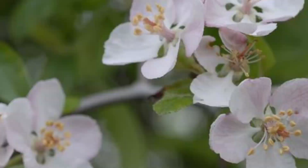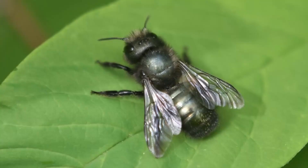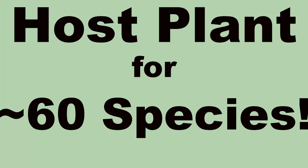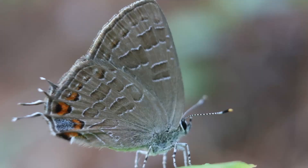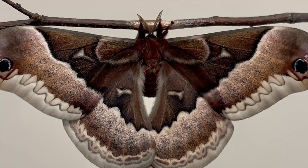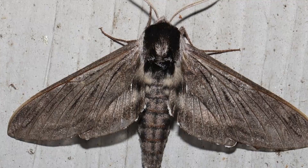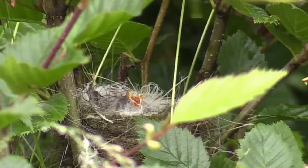The wildlife and pollinator value of the native crab apples is very high. The fragrant flowers attract a variety of native bees of all sizes, butterflies, and skippers. They are host plants for at least 60 species of moths and butterflies, including the striped hairstreak, the promethea moth, the cecropia moth, and several species of sphinx moths. If you want to provide food for caterpillars, a native crab apple is an excellent choice.